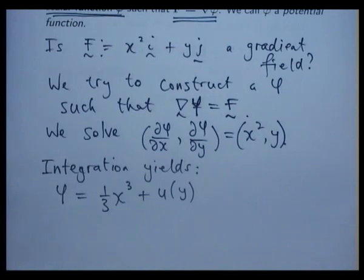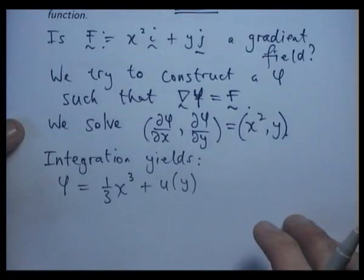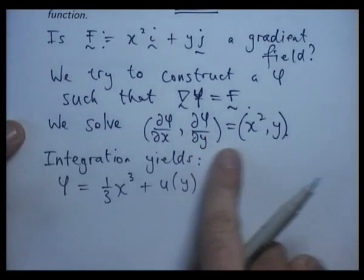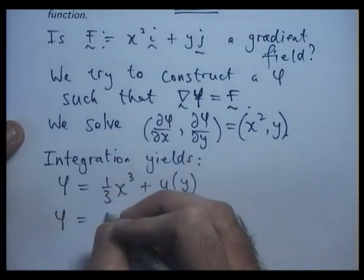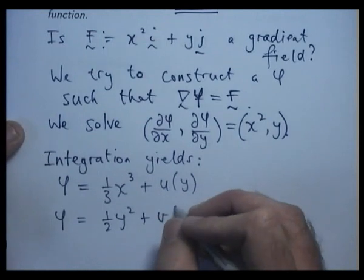Remember we're talking about partial derivatives here, so we don't have constants of integration, we have functions of integration. The integration on d phi dy equals y gives one half y squared plus v of x.